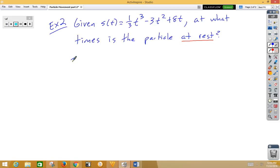So again, we need to take the derivative of the position function, which would give us the velocity function. So the derivative would be t² - 6t + 8. We're going to set that thing equal to zero.